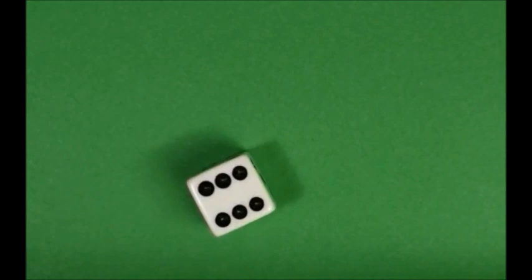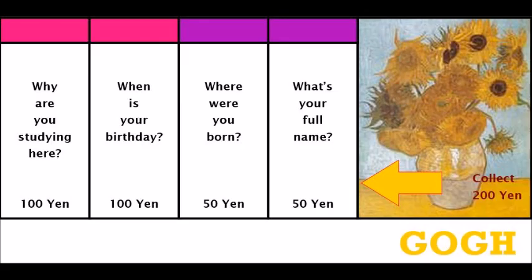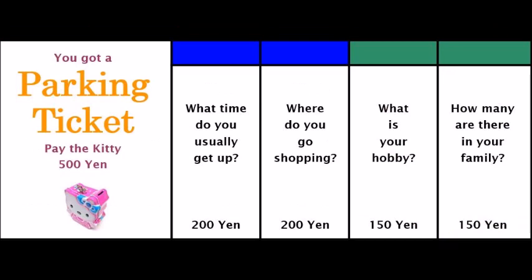If you pass go, collect 200 N. Let's begin. What's your full name? Where were you born? When is your birthday? Why are you studying here? How many are there in your family? What is your hobby?